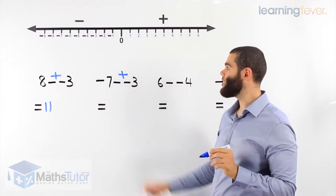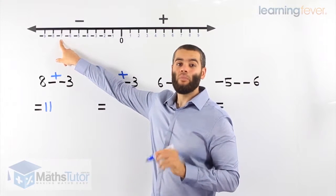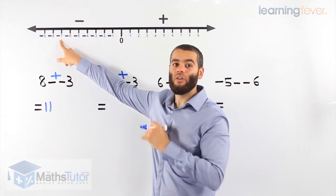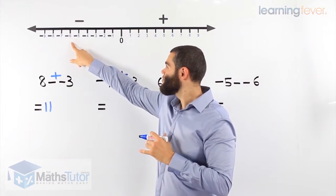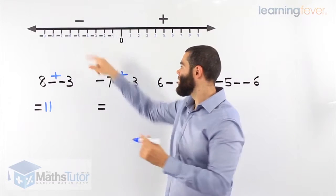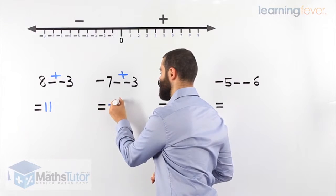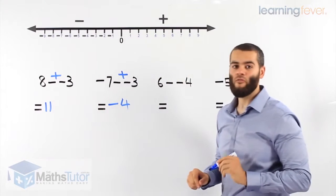We can use the number line. We start at negative 7 and we plus 3. Plus meaning we go to the right: 1, 2, 3. Our answer is simply negative 4.